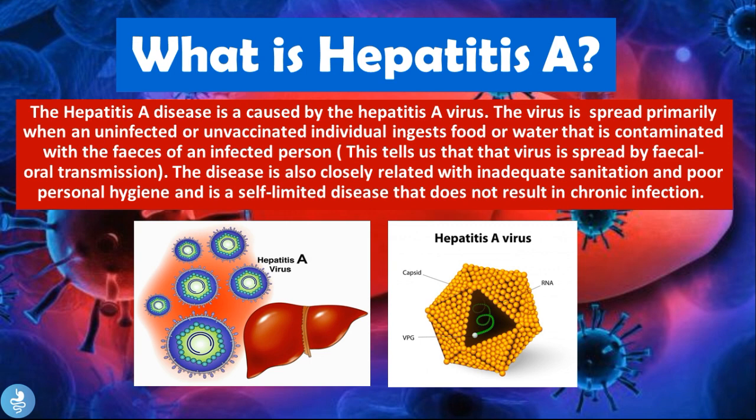So what is hepatitis A? The hepatitis A disease is caused by the hepatitis A virus. The virus is spread primarily when an uninfected or unvaccinated individual ingests food or water that is contaminated with the feces of an infected person. This tells us that the virus is spread by fecal-oral transmission. The disease is also closely related to inadequate sanitation and poor personal hygiene, and is a self-limited disease that does not result in chronic infection.